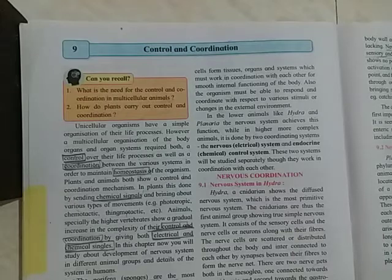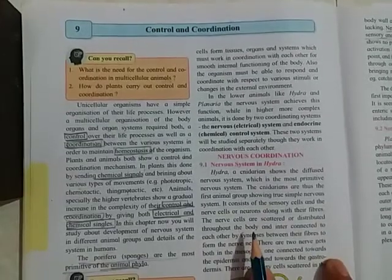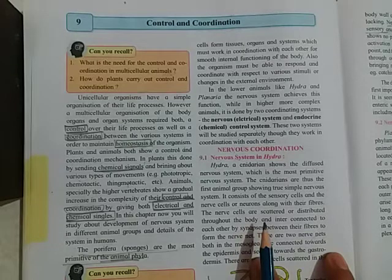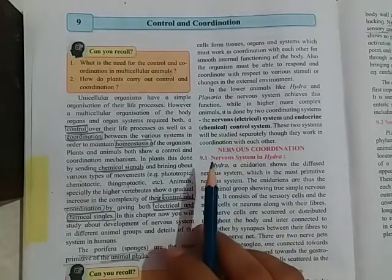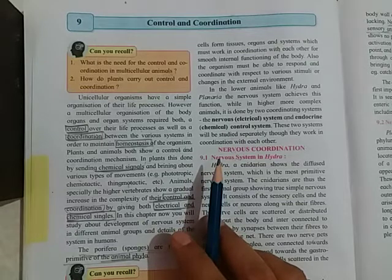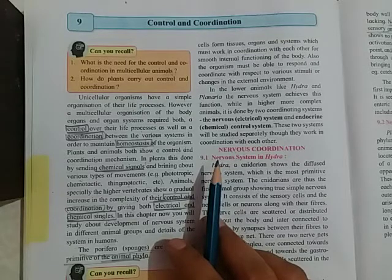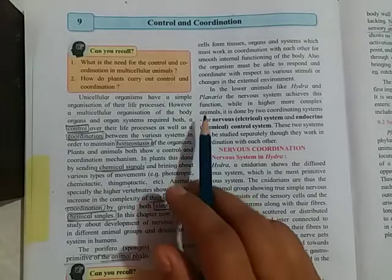Today's topic is Control and Coordination, a very important and big chapter. It gives very good information regarding the nervous system of humans and the endocrine system. As the name indicates, we need coordination — for example, the coordination of our eyes with our muscles and with our brain, so we can understand how to cross the road safely. There should be coordination in between them, and we have to maintain control in our body.